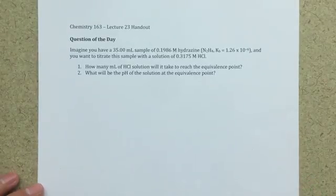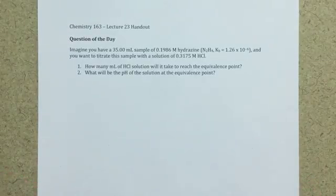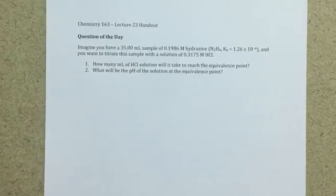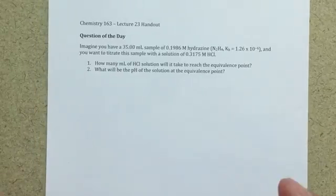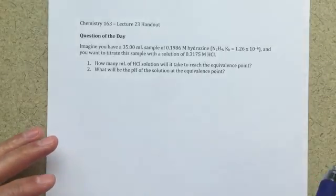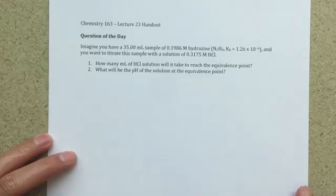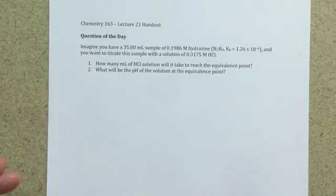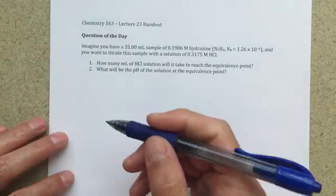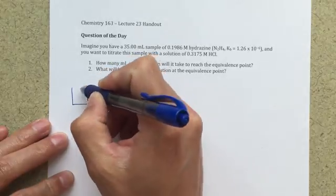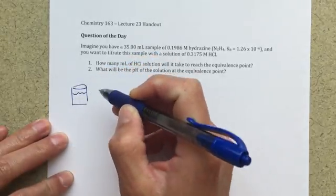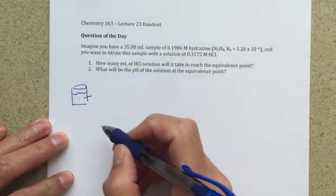Alright class, so this is a typical titration type problem where we're asked to solve for the pH at the equivalence point. And this problem is breaking it into two different pieces essentially. First part is figuring out how much HCl solution we're going to add, and the second part we actually solve for the pH. So when I'm approaching a problem like this, the first thing I'm going to do is I'm going to draw a little picture.